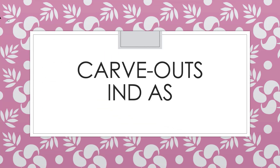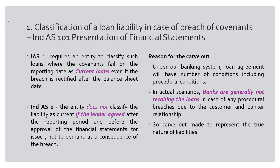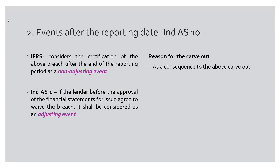What we'll do today is revise the carve-outs discussed in the previous session. The first carve-out is on classification of a loan liability in case of breach of covenants — it should be classified as non-current provided the breaches are rectified before the approval of the financial statements. The second carve-out is on Ind AS 10 'Events After the Reporting Date,' which is a consequence to the first. When breaches are rectified after the reporting date and before approval, and the lender waives the breach, it is considered an adjusting event.